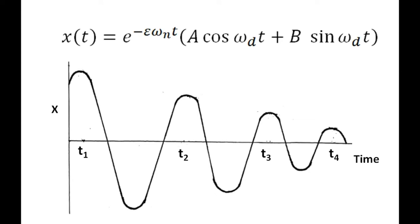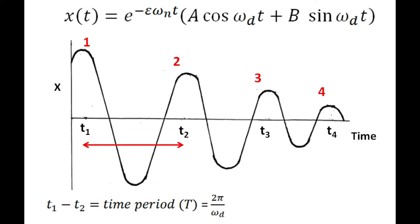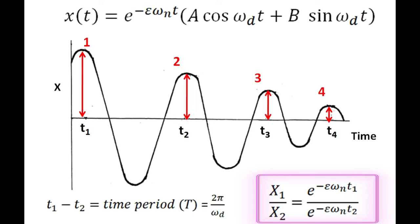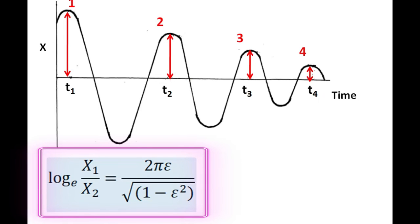In this typical plot, suppose I select four different places where my amplitude is maximum, marking them one, two, three, four. If I measure the time gap between instances t1 and t2, I find that this is my time period. If I consider the amplitudes of the four peaks as x1, x2, x3, and x4, and take the ratio of the first and second peak, after mathematical rearrangement I land on this formula where log(x1/x2) represents the logarithmic decrement. Using this formula I can get the damping coefficient.